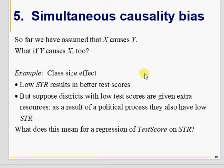The last threat to internal validity is simultaneous causality bias — one of the fundamental concepts in economics and social science, because we are interested in why things work, not just what works. For example, does class size affect test scores? If districts with poor test scores hired more teachers, that leads to a low student-teacher ratio — meaning poor test scores are causing the low student-teacher ratio, not the other way around. Foreign direct investment and economic growth, and export-led growth, all suffer from simultaneous causality bias.